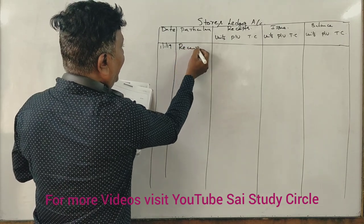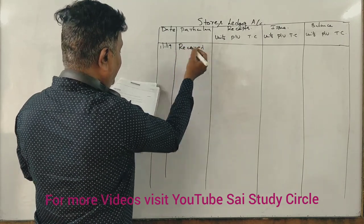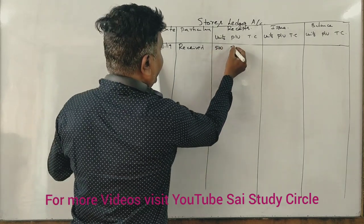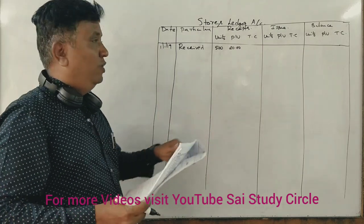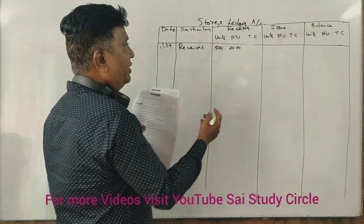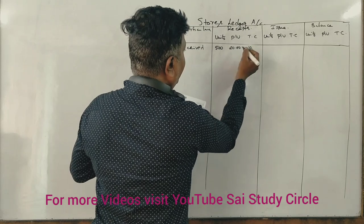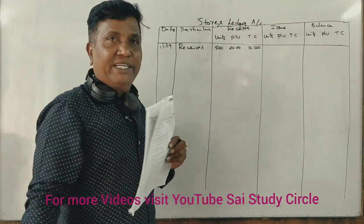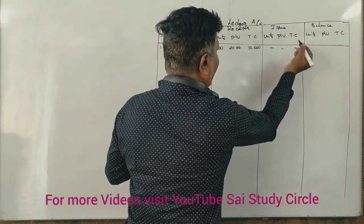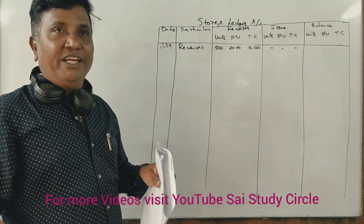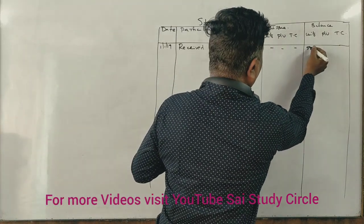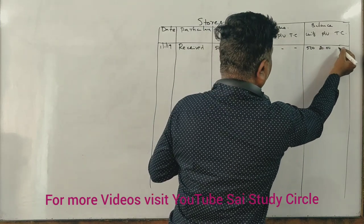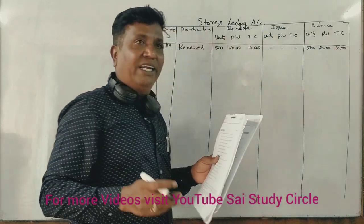For the first transaction — purchase and receive — on January 1st, we received 500 units. 1 unit is ₹20 rupees. So 500 units at ₹20 = ₹10,000. This is entered under receipts. The closing balance on January 1st is 500 units at ₹20 rupees, totalling ₹10,000.